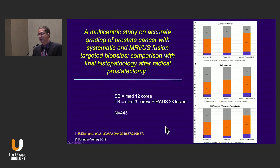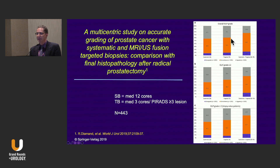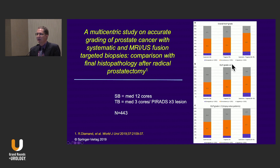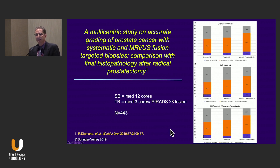How does this compare with prostatectomy as the gold standard? A study out of Europe showed that looking at 12-core systematic biopsies and targeted biopsies, the targeted biopsies showed higher concordance with prostatectomy results and less upgrading for cancers overall. Also noted was that the combination of using a systematic biopsy plus a targeted biopsy performed better than either one alone — more concordance and less upgrading at the time of prostatectomy.